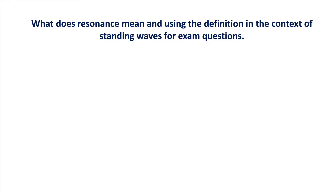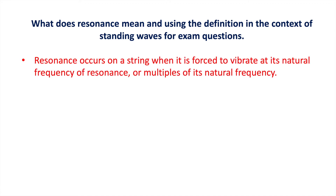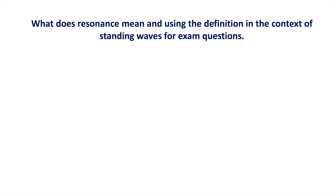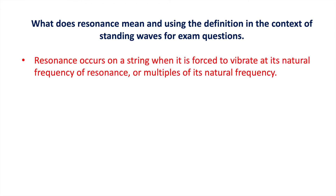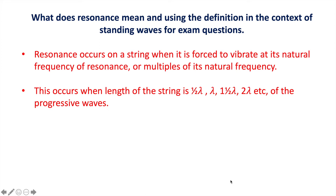To use resonance to explain standing waves in exam questions, clearly state: resonance occurs on a string when it is forced to vibrate at its natural frequency of resonance, or multiples of its natural frequency. This occurs when the length of the string is half-lambda, lambda, one-and-a-half lambda, two lambda, etc., of the progressive waves that set up the standing wave.